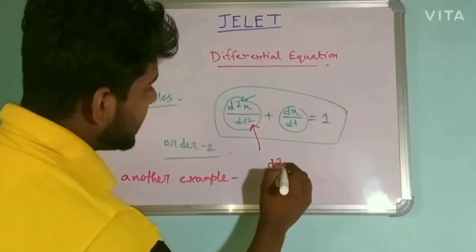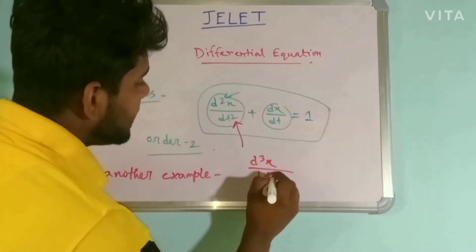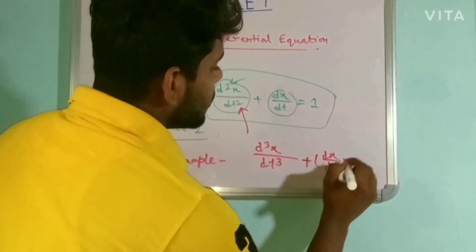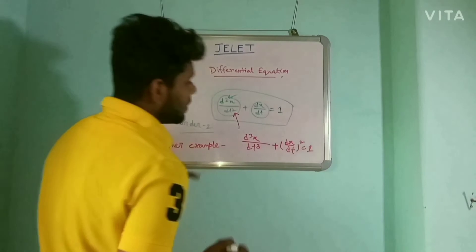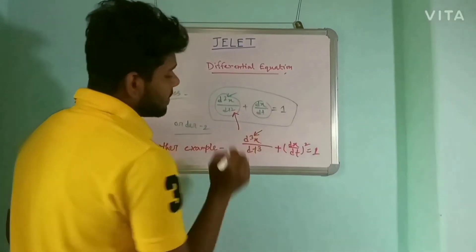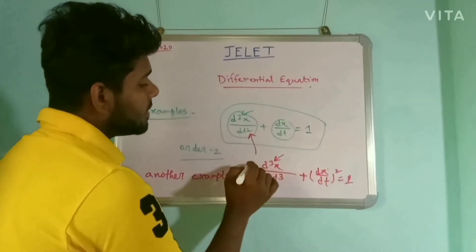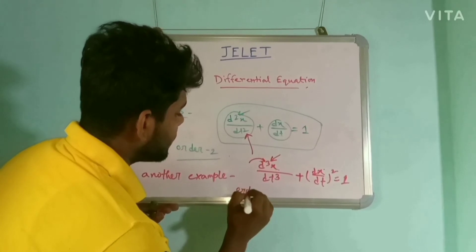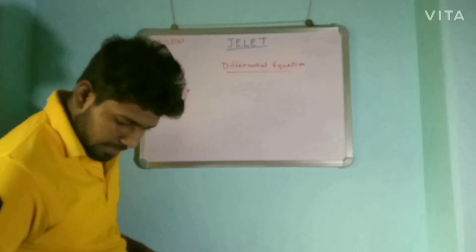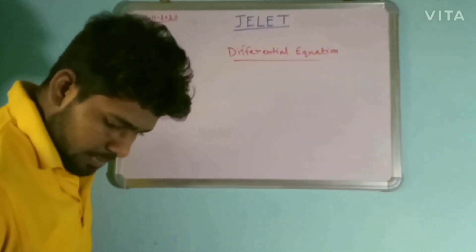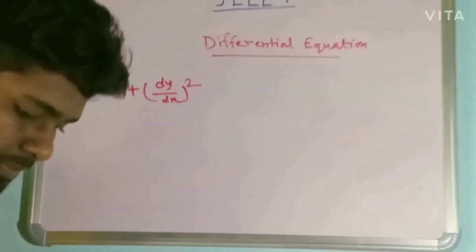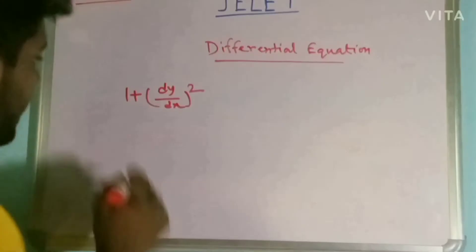Another example: d cubed x over dt cubed plus dx over dt whole square equals 1. The order of this equation is 3, because the highest number of the derivative is 3. So the order of this equation is 3.